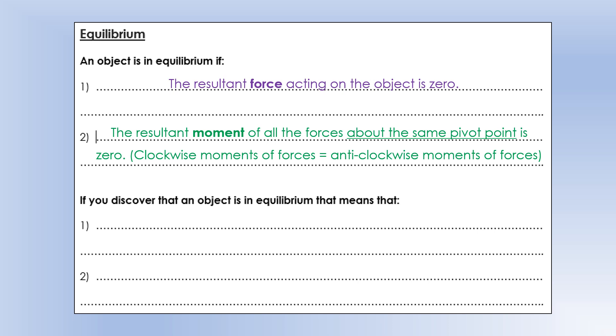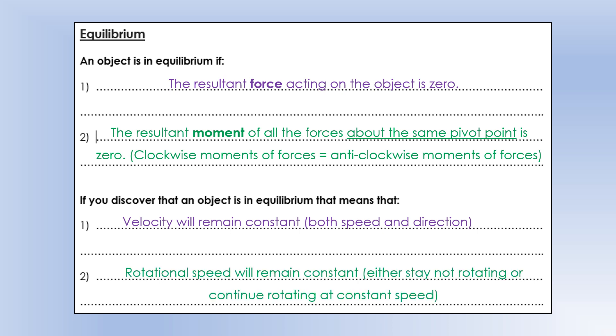So if an object is in equilibrium, that tells us a few useful things. It tells us the velocity will remain constant, both the speed and the direction. And it also tells you the rotational speed will remain constant. So if it's not rotating, it will stay not rotating. Or if it's rotating at a certain speed, it will continue rotating at that speed.